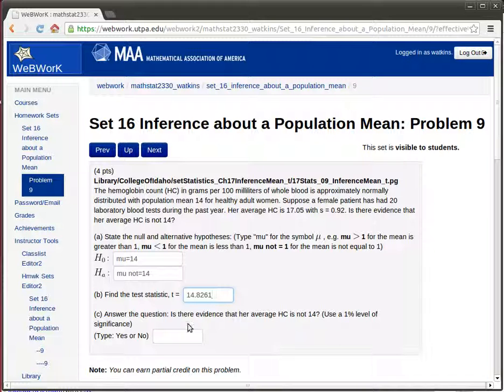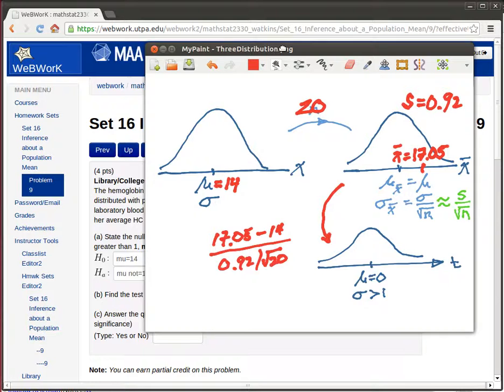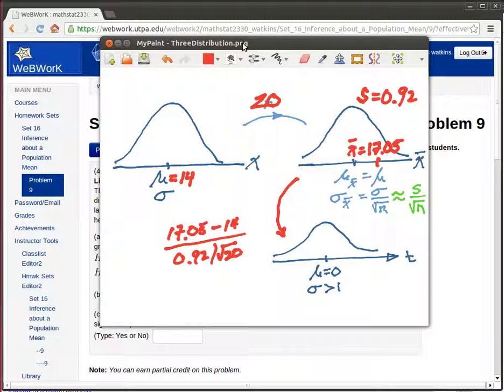So now we need to answer the question, is this evidence that her average HC is not 14? And we want to do that at the 1% level. So the issue here is we want the significance level to be 1%, but it's a two-tailed test because all that we're interested in is the null hypothesis is that it's not equal.